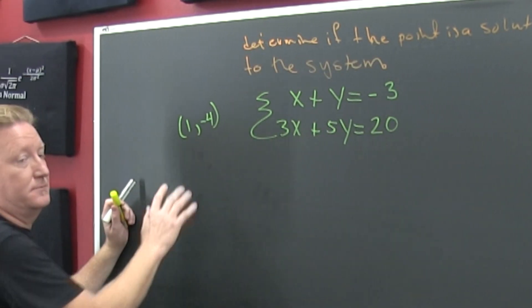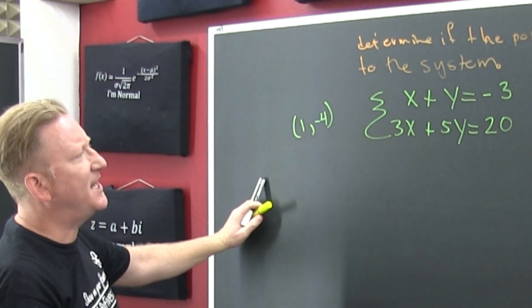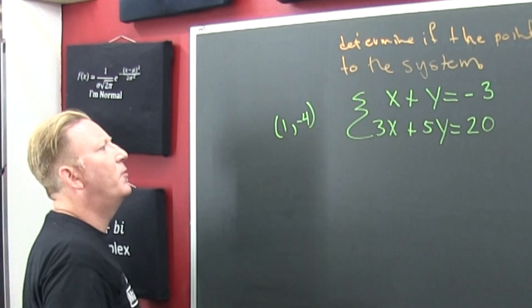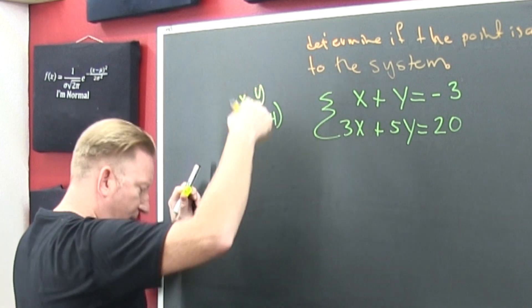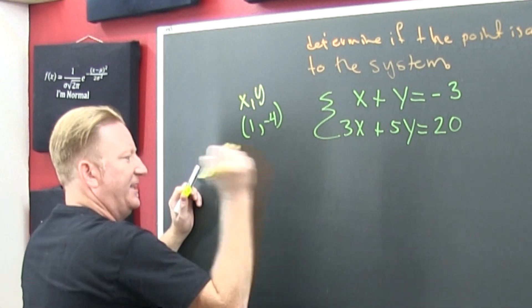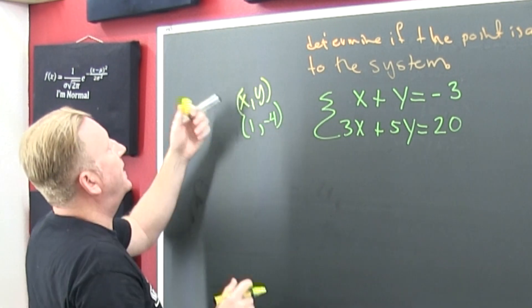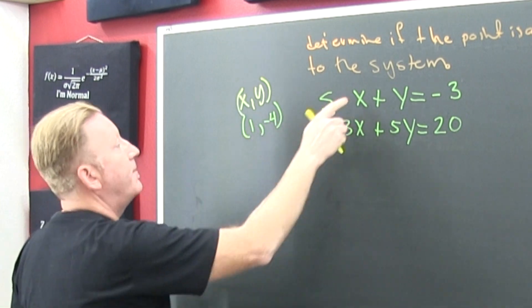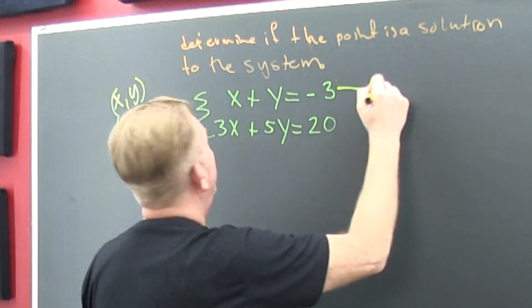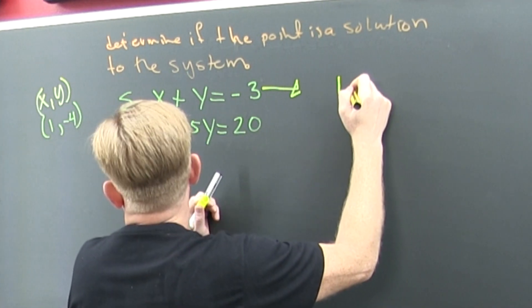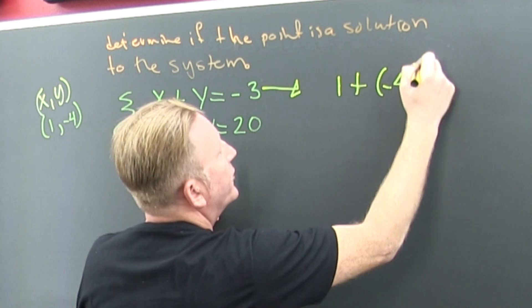So, what do you got to do? Stick it in. What do you put where? This is the X and that's the Y. So, that's the X, that's the Y. I'm going to put them there. Here I got what? 1 and minus 4.